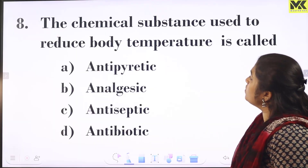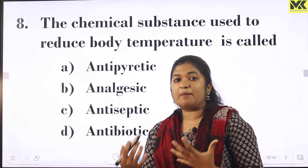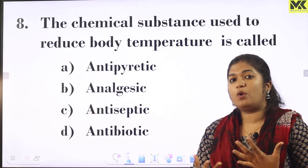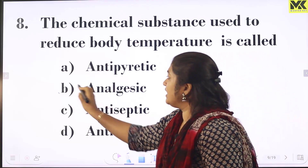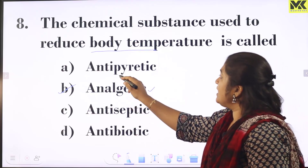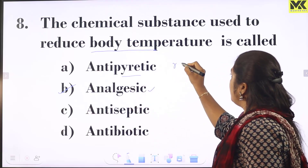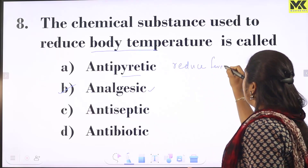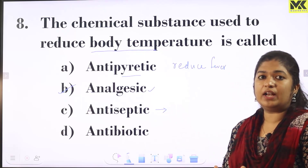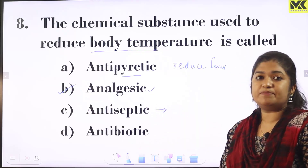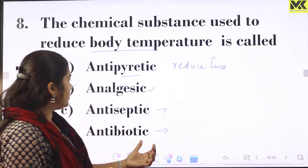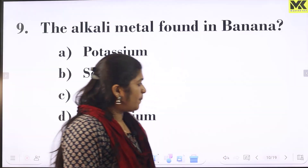The chemical substance used to reduce body temperature is called an antipyretic. Examples include dolo or paracetamol. Analgesics reduce pain, antipyretics reduce fever, and antiseptics are used to prevent infection.